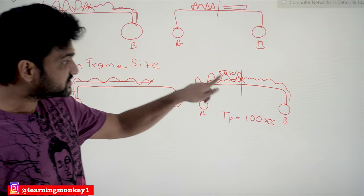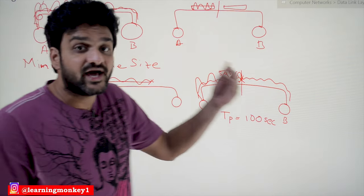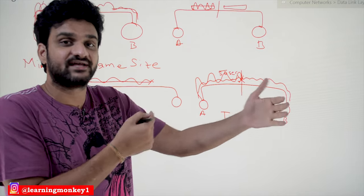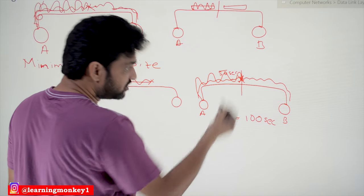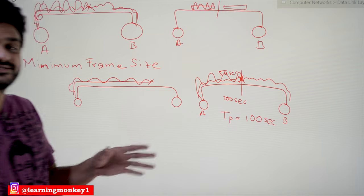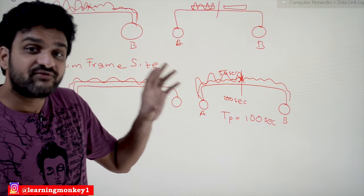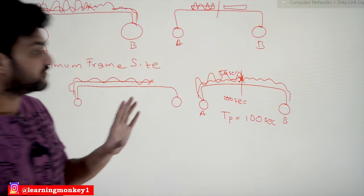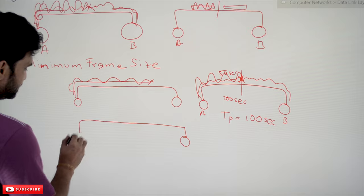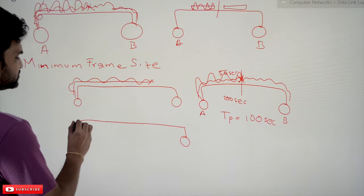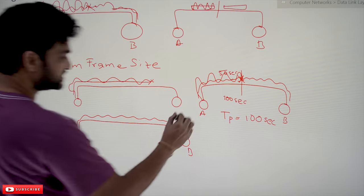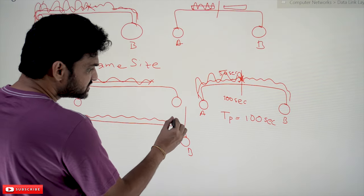After the collision, the distorted signal takes another 50 seconds to reach station A — so detecting a collision at the center takes 100 seconds total. But we must consider the worst case. In the worst case, station A transmits continuously toward station B, which is the farthest station. The signal almost reaches B — after 99.9 seconds — and station B senses the channel as idle just before the signal arrives, so B begins transmitting.